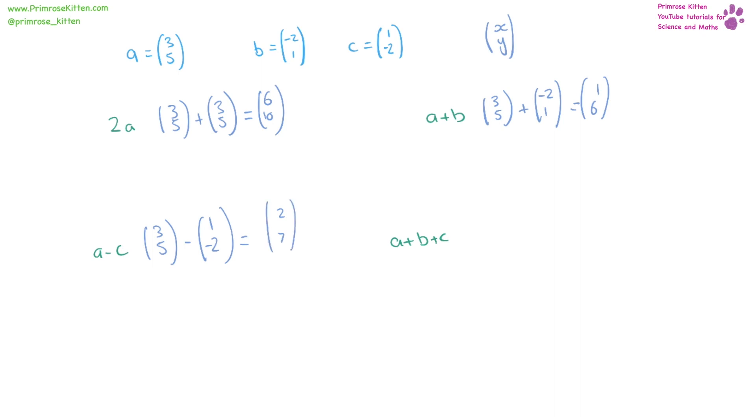a plus b plus c, so we have (3, 5) plus (-2, 1) plus (1, -2). All the way to the top, 3 minus 2 plus 1 gives us 2. 5 plus 1 minus 2 gives us 4.